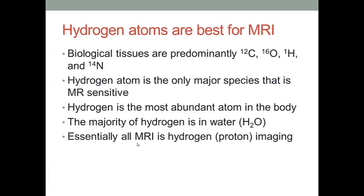So in all of these kinds of atoms, we know the hydrogen atom is the only major species that is MR-sensitive. So generally in MR imaging, we use hydrogen imaging. We just use the hydrogen in the human body because the human body is composed of a lot of water. So essentially all MRI is hydrogen imaging.